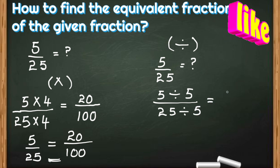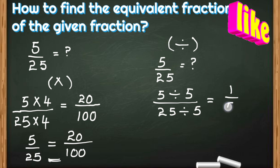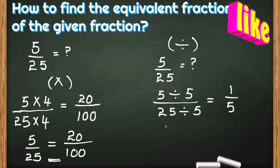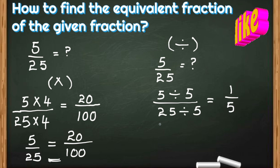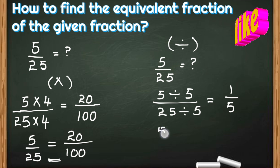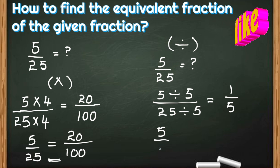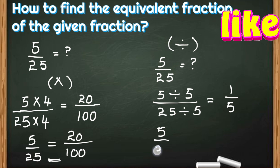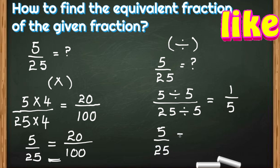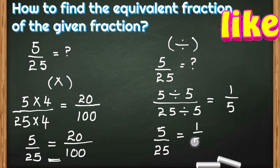So let us divide both of them by 5. 5 divided by 5 is 1, and 25 divided by 5 is 5. So we got 1 by 5 after dividing both the numerator and the denominator by 5. So 1 by 5 is the equivalent fraction of 5 by 25.